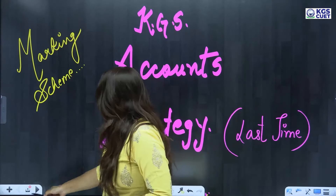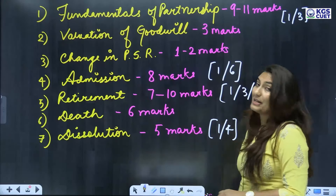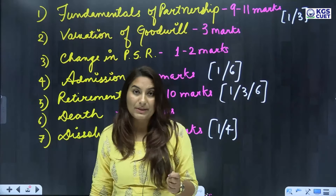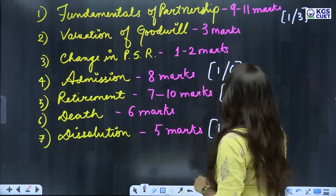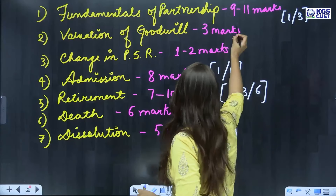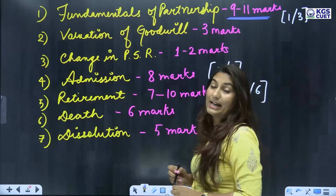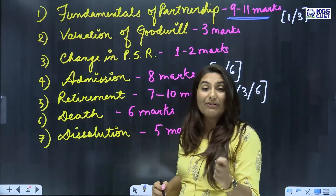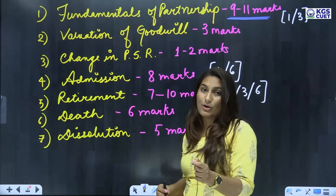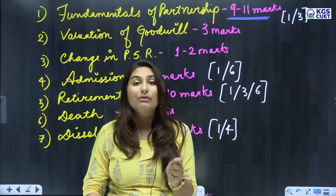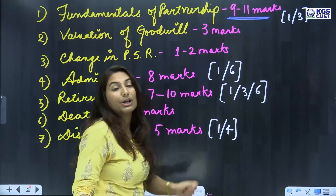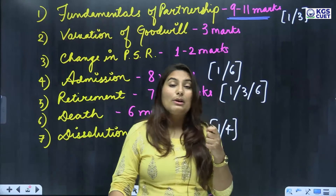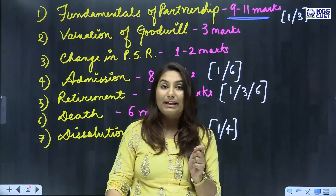First, let's talk about fundamentals of partnership — we get the most marks here. You get 9 to 11 marks from this topic. There are 8 to 9 questions of 1 mark each, covering interest on capital, interest on drawings, and loan interest — all these questions come from this topic.